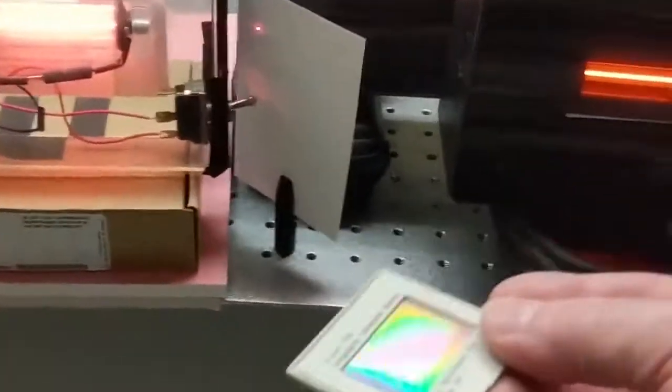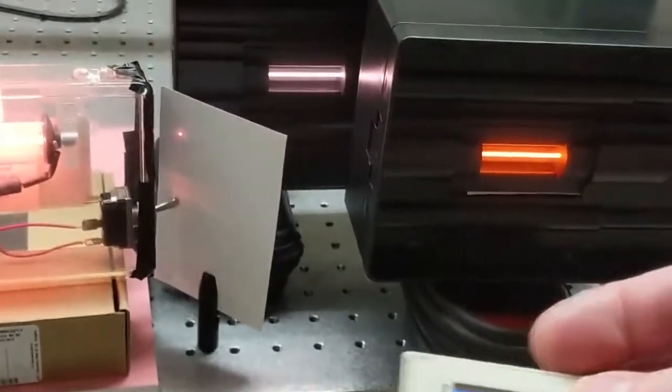We're going to look through this, which is a diffraction grading. So let me turn off the lights and close the door. Let's see what kind of a view we can get. I'll try to put this in front of the camera. There we go.